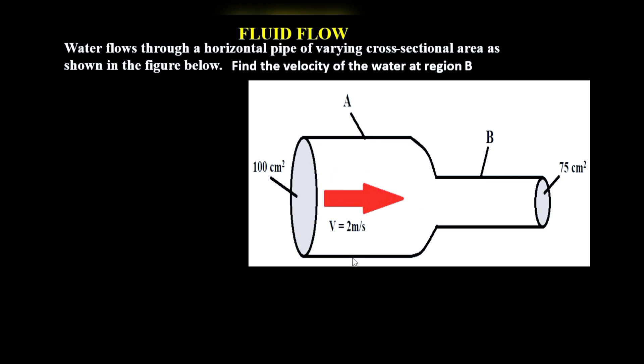Before we continue, we need to note that the volume flux in region A must equal the volume flux in region B. In other words, the rate of flow in region A equals the rate of flow in region B. This simplifies to the equation of continuity, which is given by A1V1 equals A2V2.